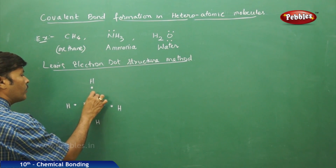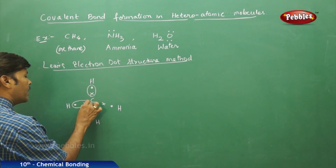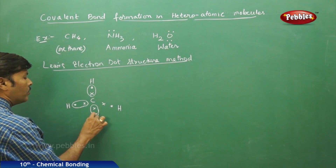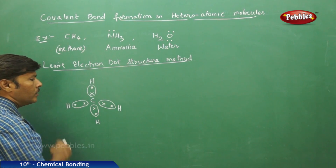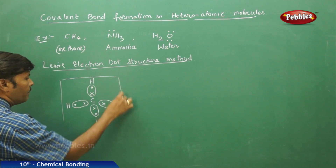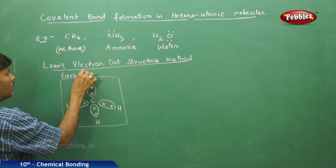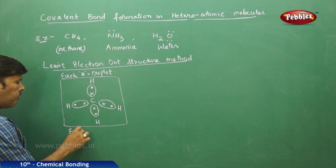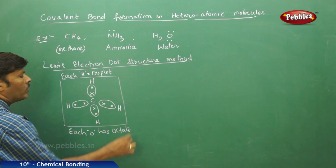Each hydrogen will try to share one electron of carbon, resulting in the formation of one bond pair. The same applies for the second, third, and fourth hydrogen. We find that each hydrogen is able to acquire duplet stability, and each carbon has octet stability.